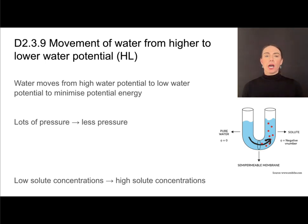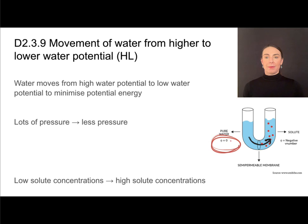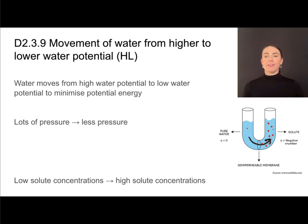On the left side we have pure water, and on the right side we have a high solute concentration. That means we are going to have a very negative number for water potential on the right and a zero on the left. Water always moves towards areas of lower water potential, so it will move from zero to the negative — from the pure water side into the high-solute side.